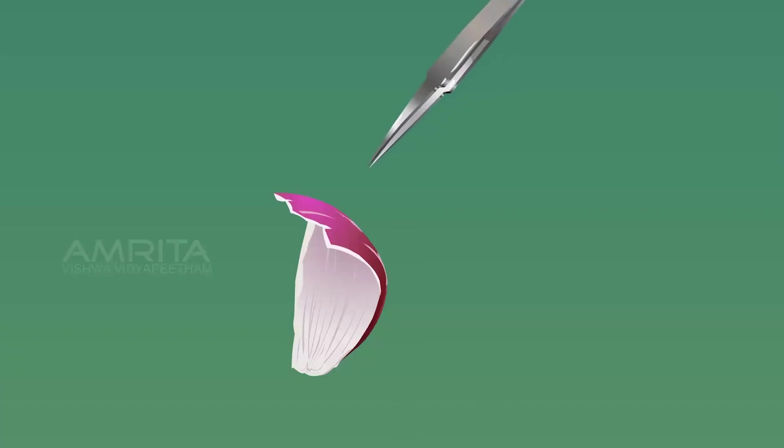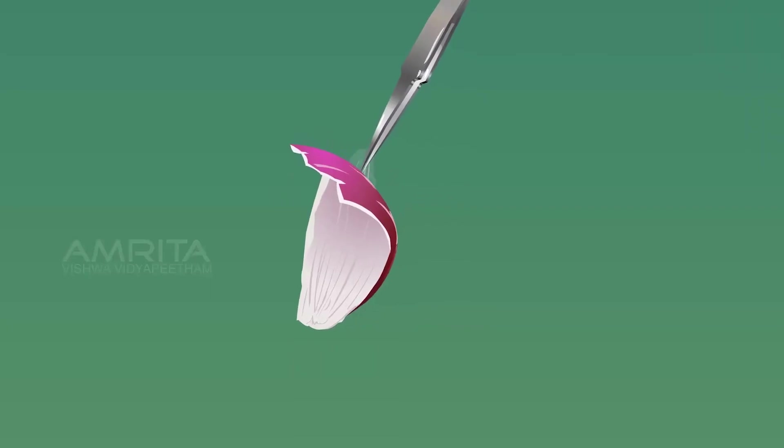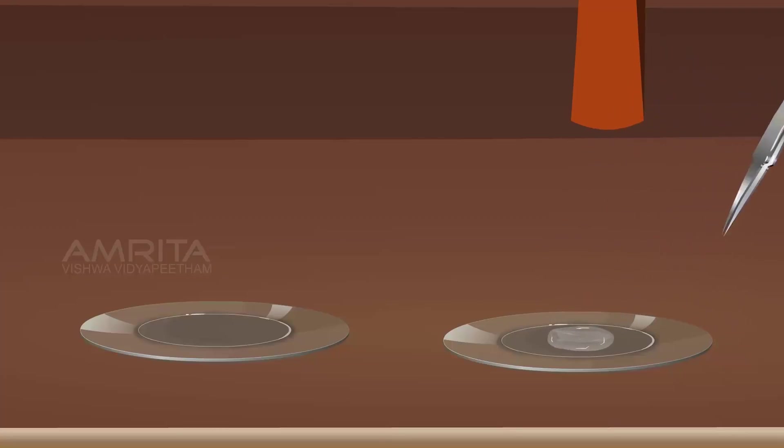Remove a piece of transparent onion peel with the forceps. Put the epidermis into the watch glass containing water.